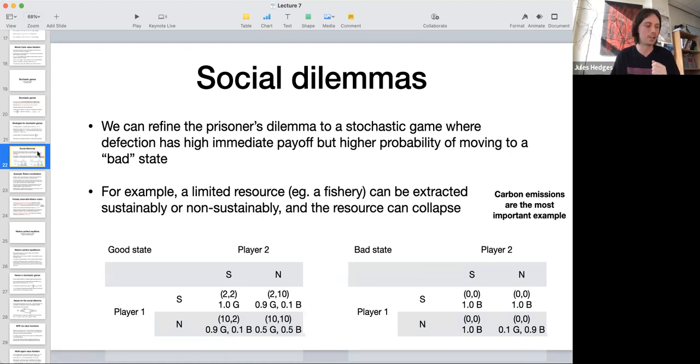We can refine this to a more realistic model by playing games on a Markov chain. The simplest thing we can do is to have a Markov chain with two states which we call the good state and the bad state. We imagine that we start in the good state, and when you're in the good state, you get a higher immediate payoff for doing a thing that increases the probability of transitioning to the bad state.